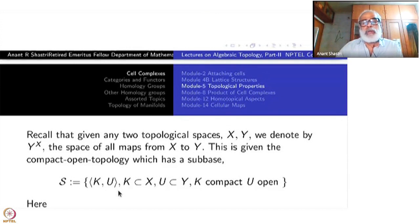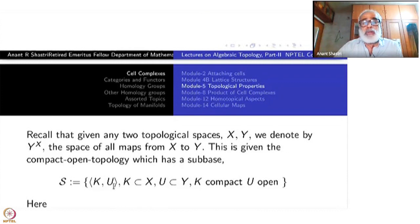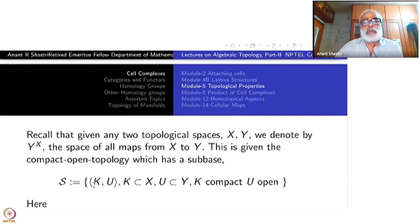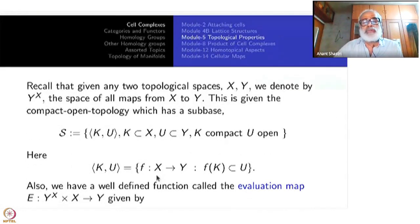So what is [K, U]? That is all continuous functions F from X to Y such that F of K is contained inside U. You take all such [K, U]; they are subsets of Y power X and they form a sub-base.